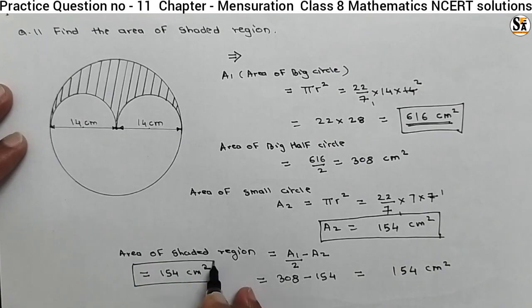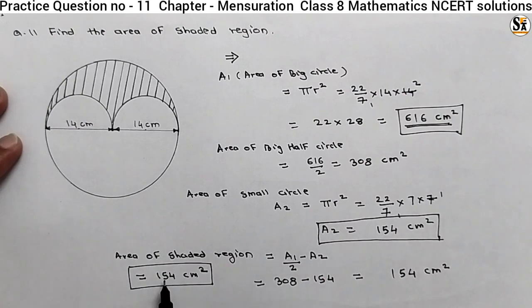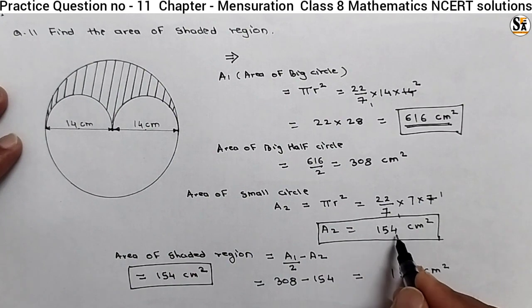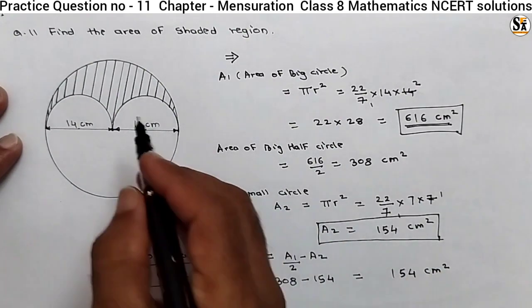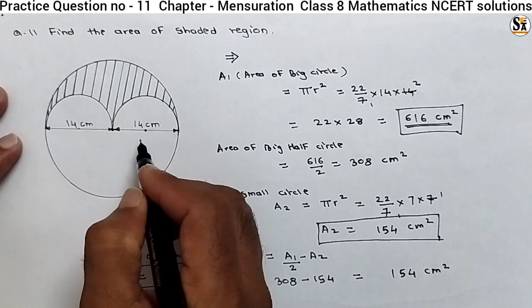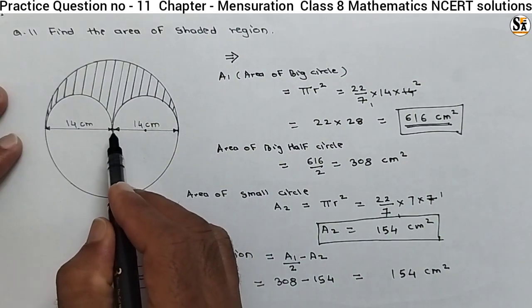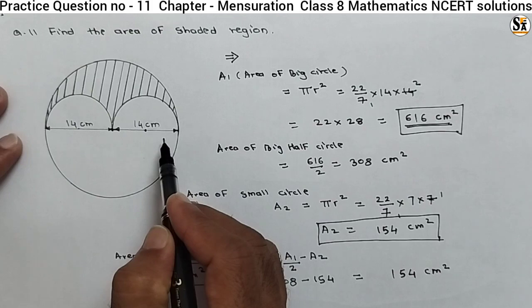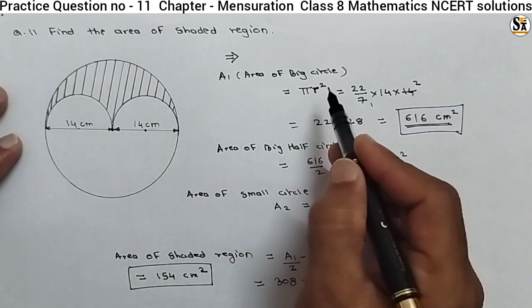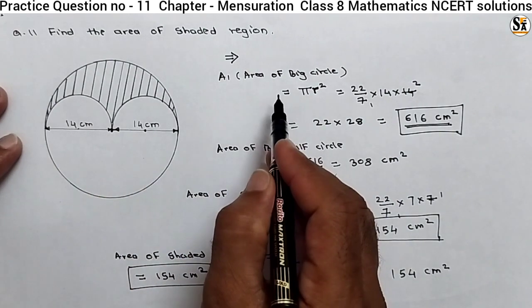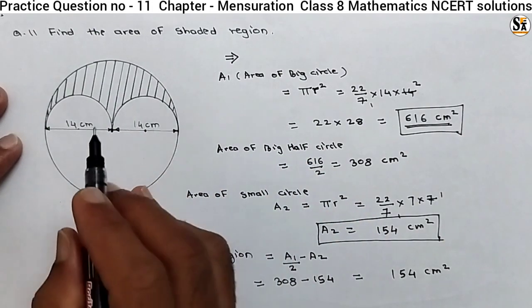This is our final answer. Now you can notice: this shaded region has an area of 154 centimeter squared. Also, the area of the small circle — this half circle and this half circle — is also 154 centimeter squared. The small circle has half the radius of the full circle. The meaning of this is that as the radius is reduced to half, the circle area is reduced to one-fourth. Because there is R squared — square of 2 is 4 — so area becomes one-fourth.